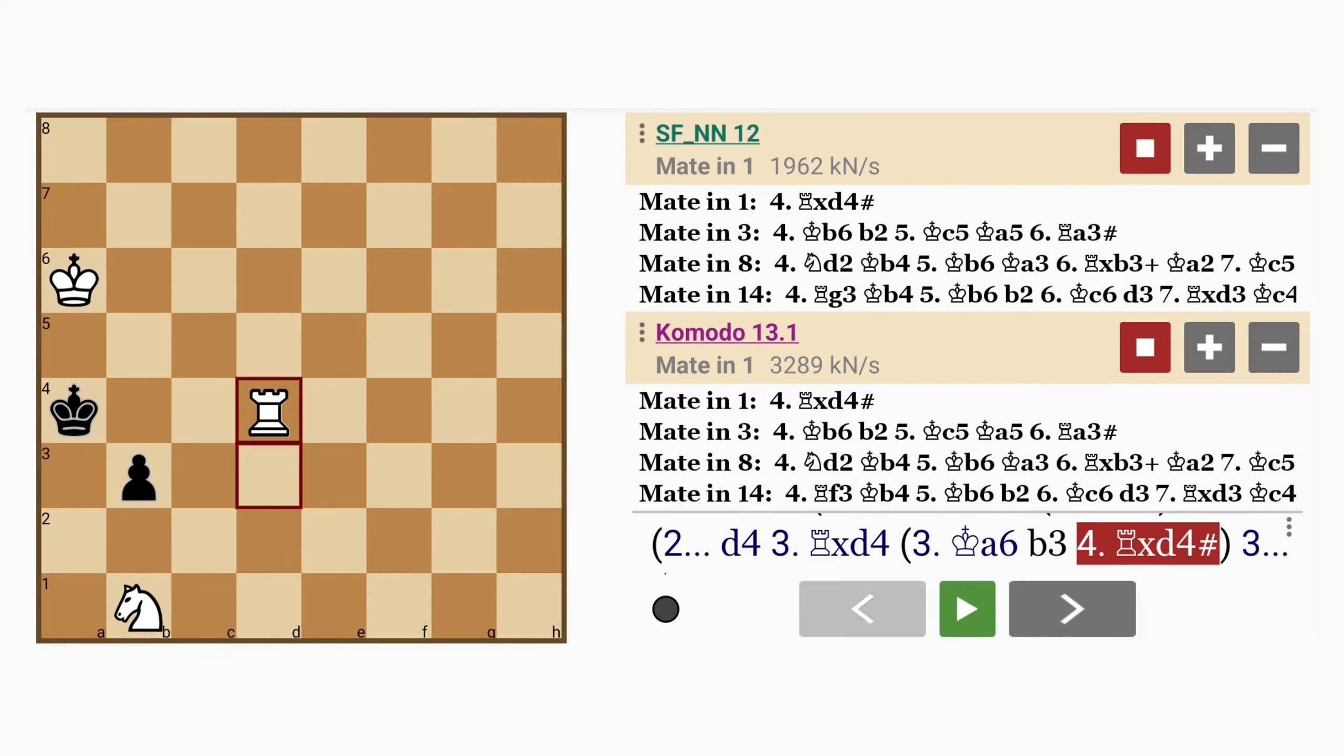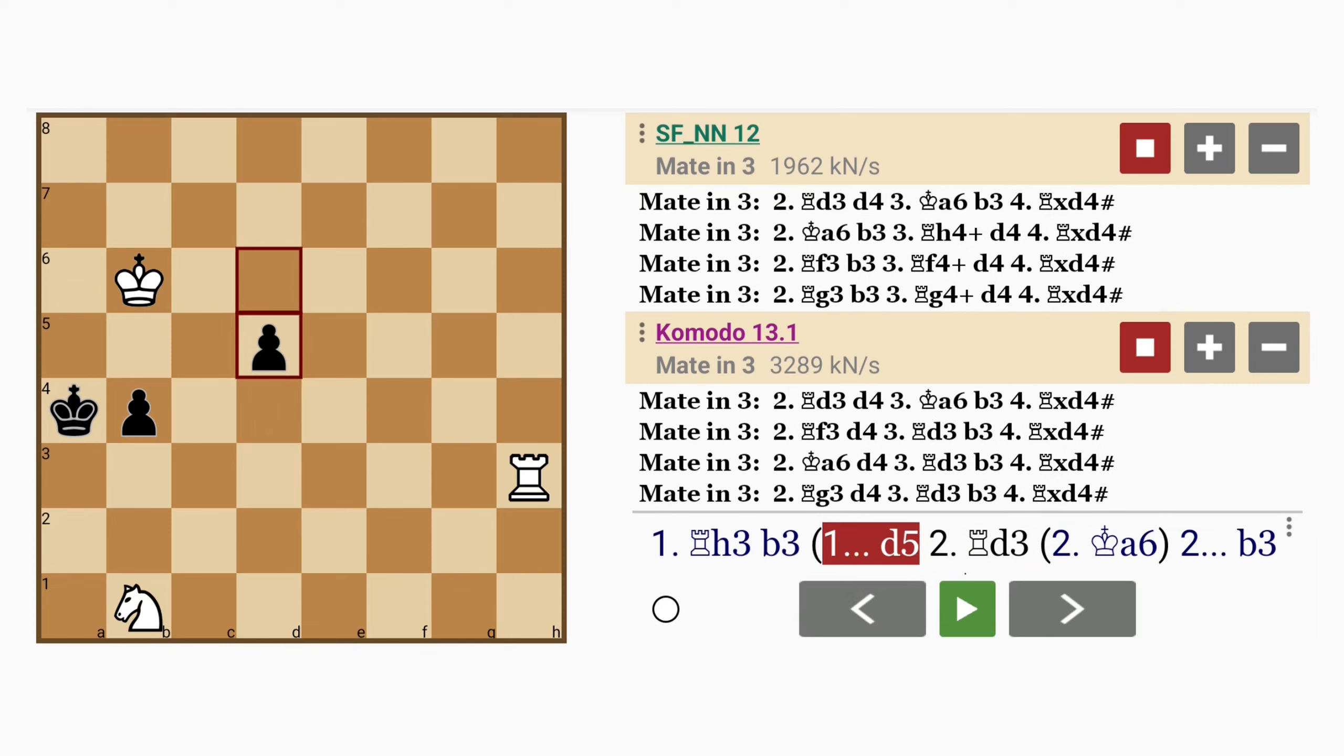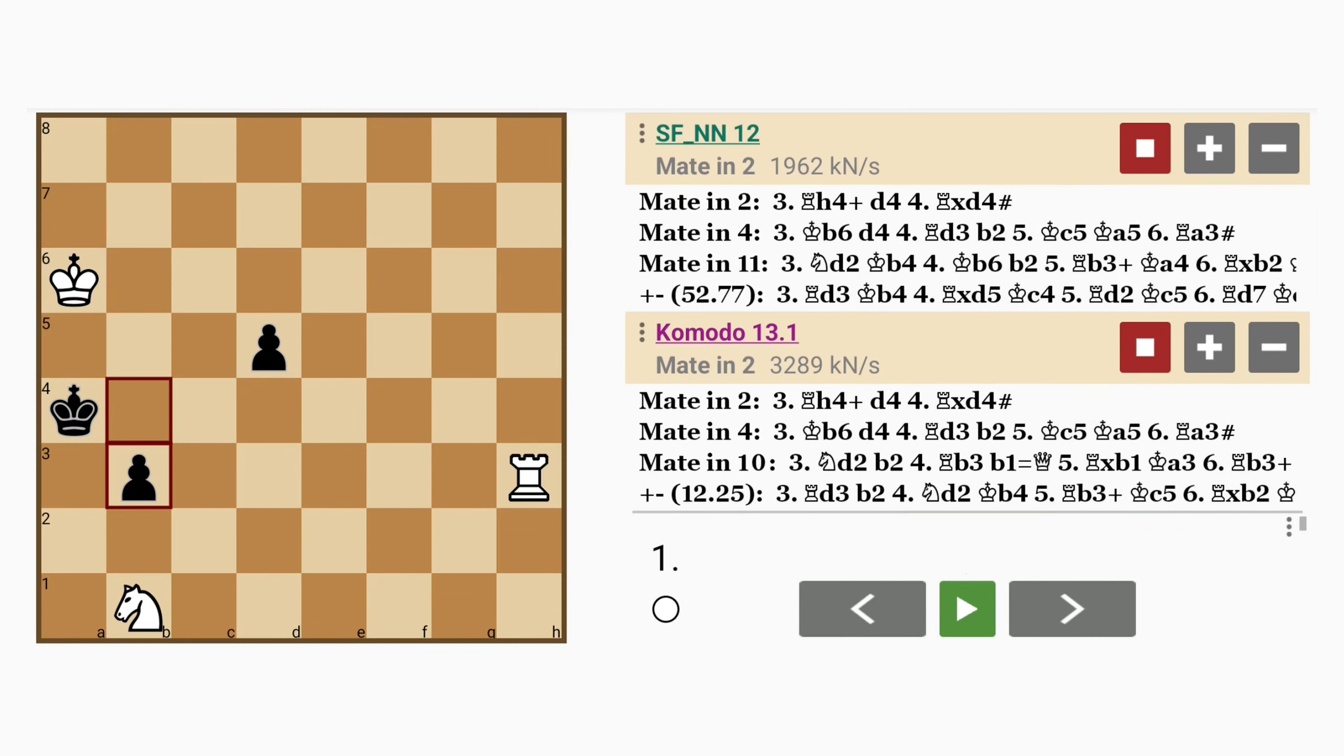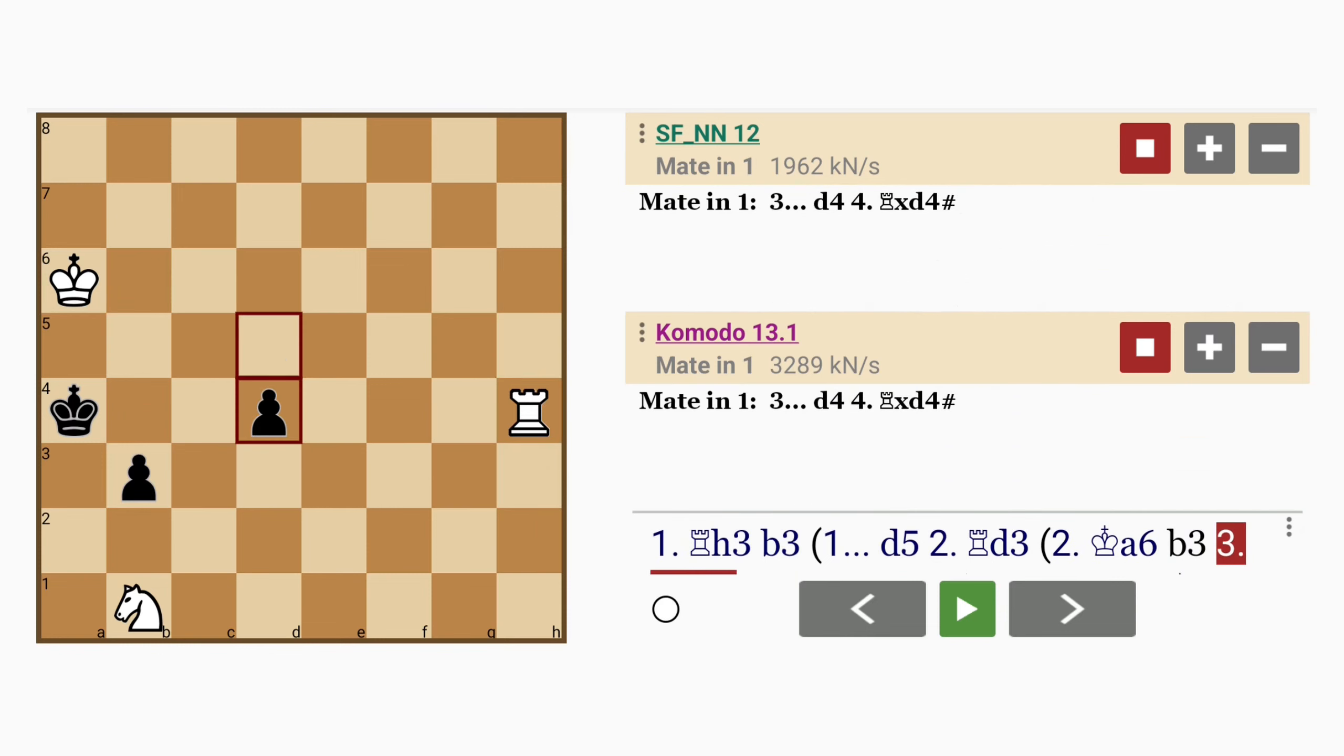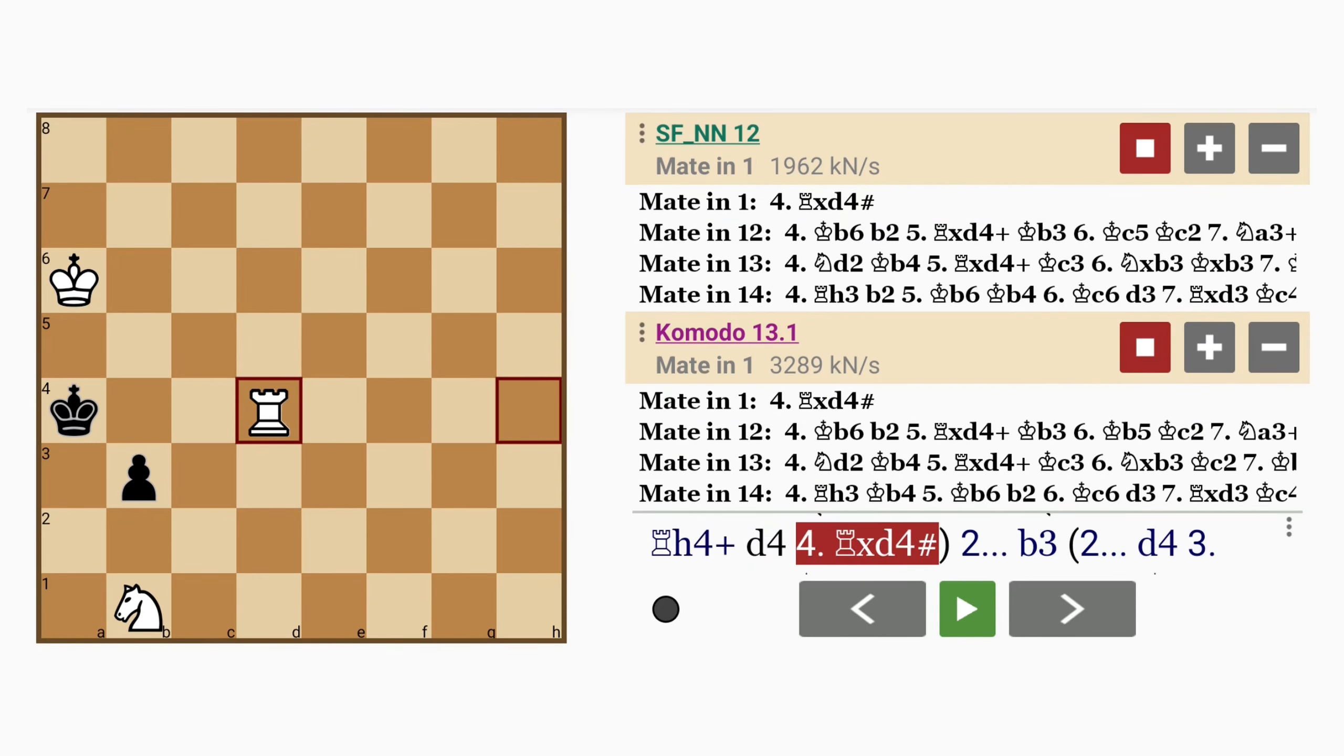Allowing rook captures pawn with mate. Alternatively, at this point, white could play king to a6, and here if b3, rook to h4, d4, rook captures pawn with mate, or d4.